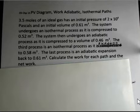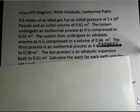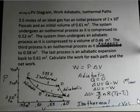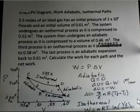We want the work for each path and the net work. So we start by making a diagram. Our diagram has pressure on the vertical scale, and these are 10 to the fourth marks with 4 times 10 to the fourth at the top. The volume scale is in cubic meters: 0.45, 0.5, 0.55, 0.6. We're starting at point A, then the first process goes to point B, the second process to C, the third to D, and then back to A.